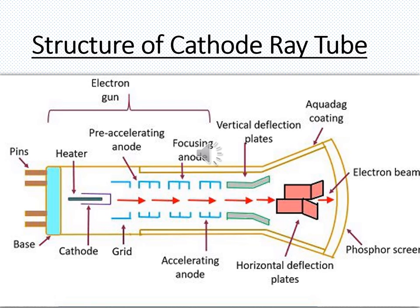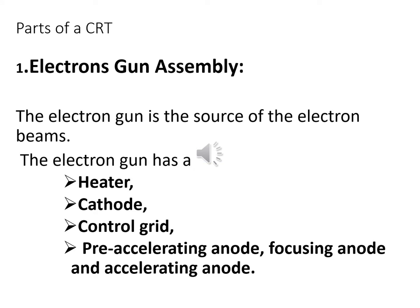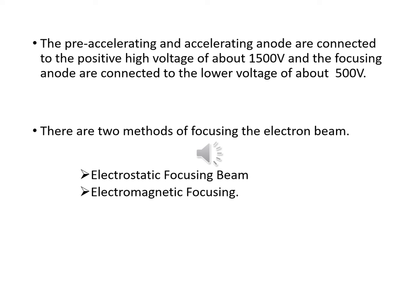These are the different parts of a cathode ray tube. To summarize: the electron gun assembly consists of the heater, cathode, control grid, pre-accelerating anode, focusing anode, and accelerating anode. The cathode and control grid are negative electrodes, while all three anodes are positive. The pre-accelerating and accelerating anodes are connected to a positive high voltage of about 1500 volts, while the focusing anode operates at 500 volts.